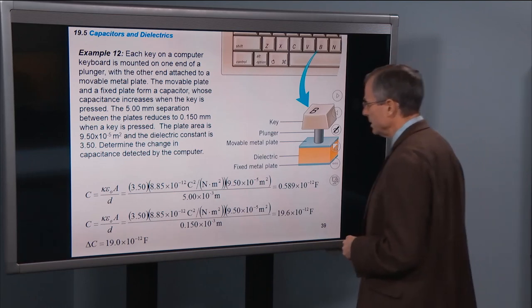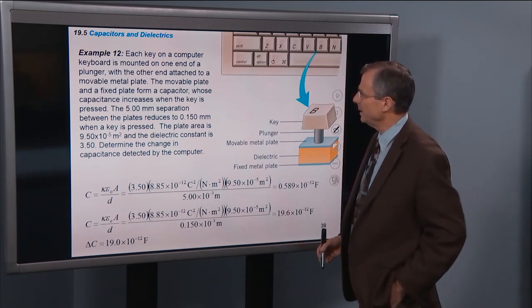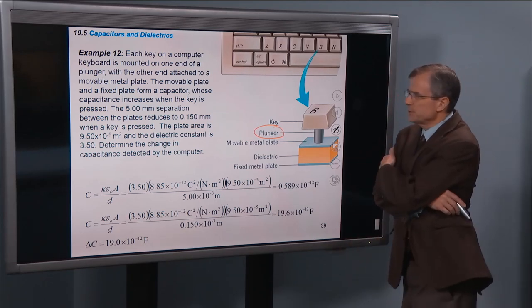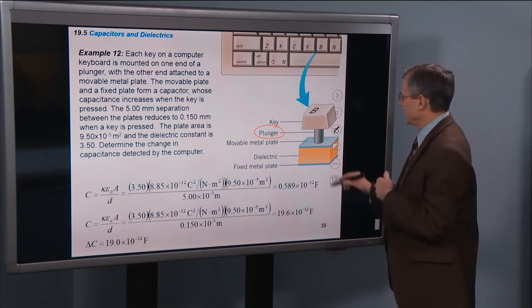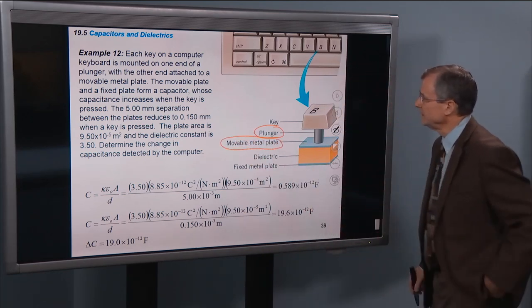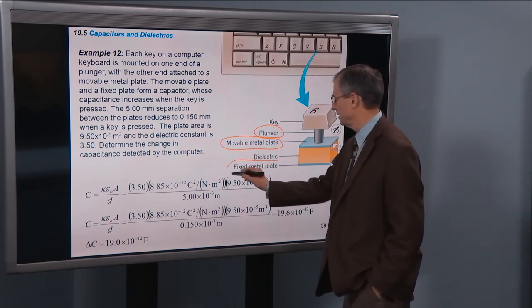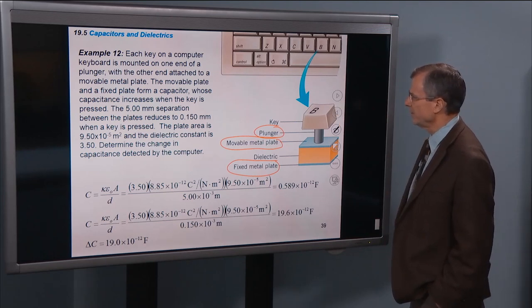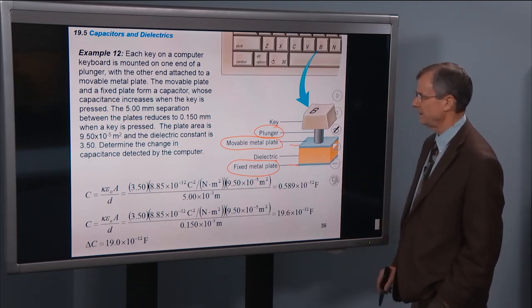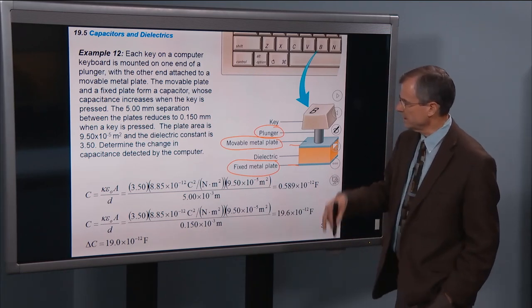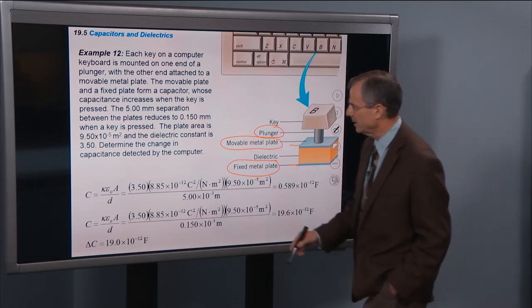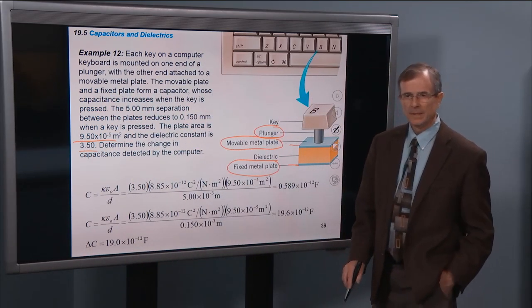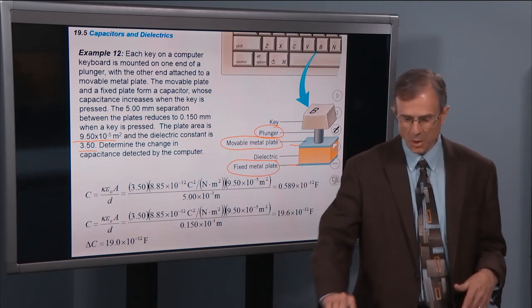Another quick example, this is pertinent to your computer keyboards. Each key on a computer keyboard is mounted on one end of a plunger, so that's this plunger here, with the other end attached to a movable metal plate. That's this guy here. The movable plate and a fixed plate form a capacitor, whose capacitance increases when the key is depressed, is pressed. The 5 mm, so this is initially 5 mm separation between here and here, reduces to 0.15 mm when you press the key. And it's given, they give us the plate area and the dielectric constant. And the question is, the change in the capacitance detected by the computer. So the computer, the reason that the computer knows that you've touched a key, is that there's a change in capacitance.